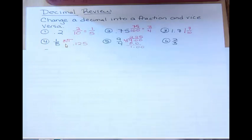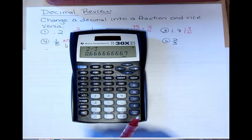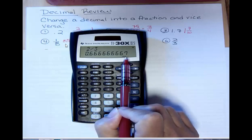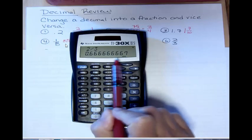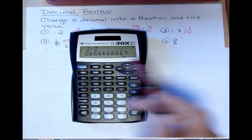What happens when you do 2 thirds? If you do 2 divided by 3, then you get 0.6666666. Notice the last number here is a 7. That's because if you decide to round this, the next number would be a 6, so it would always round that last one up to a 7.